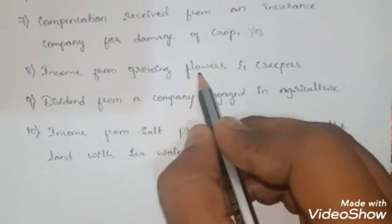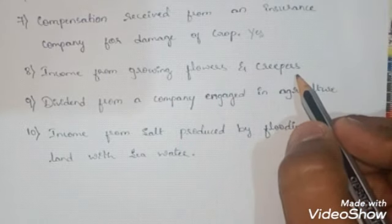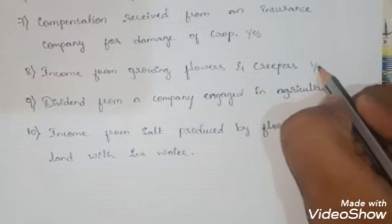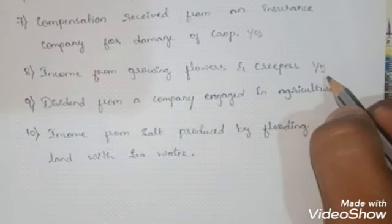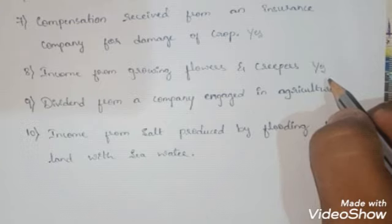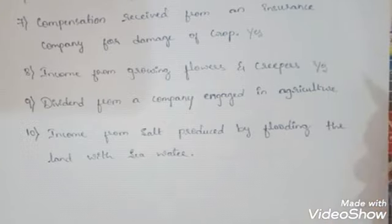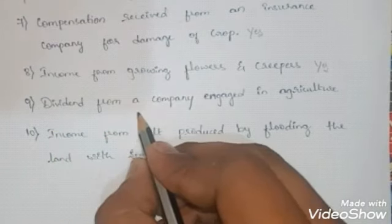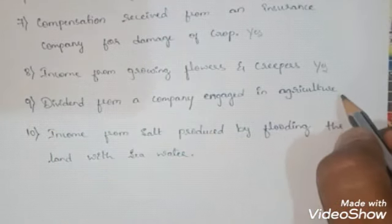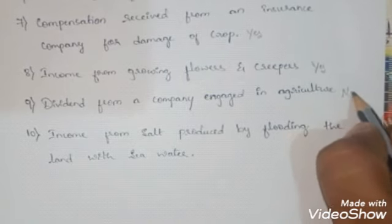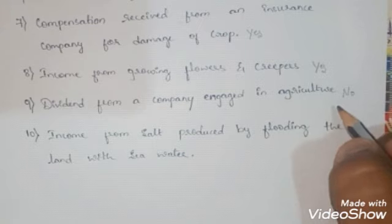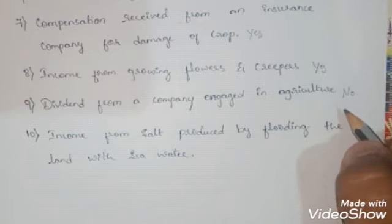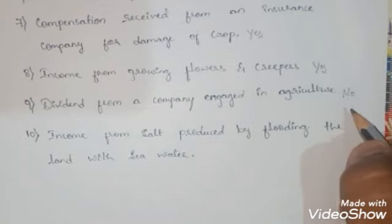Eighth: income from growing flowers and creepers — the answer is yes. This income is treated as agricultural income because horticultural activities are involved. Ninth: dividend from a company engaged in agriculture — the answer is no. This is not agricultural income because we are receiving a dividend from a company. However, we must remember that dividends received from any Indian company are exempt from tax, though this income cannot be treated as agricultural income.